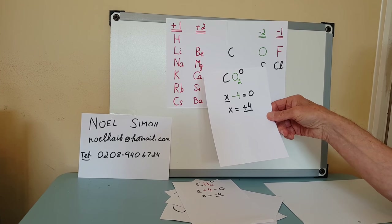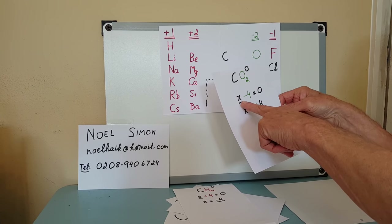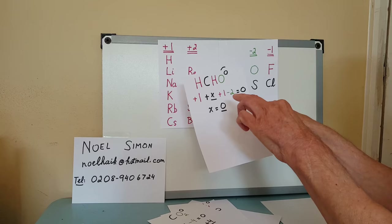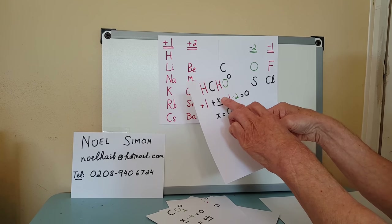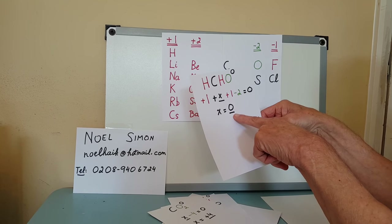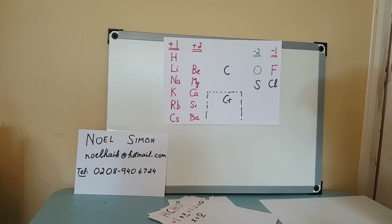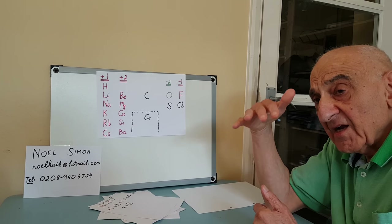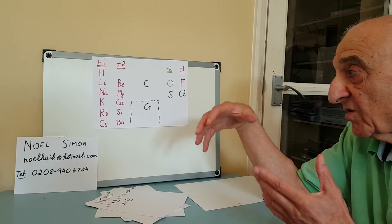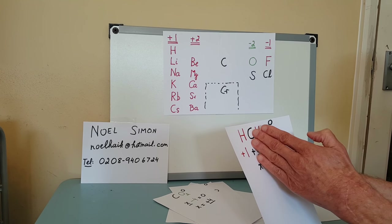Another familiar example: CO₂. Oxygen is −2; two oxygens give −4. So x − 4 = 0, meaning carbon must be +4. Next, one that might look a bit odd — methanol (CH₂O): two hydrogens at +1 each, oxygen at −2; carbon works out at zero. Oxidation and reduction can be thought of as a kind of bookkeeping: instead of money, you're dealing with electrons. In this case, negative charge has moved away from hydrogen and also from carbon, towards the oxygen.